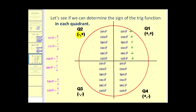In the second quadrant, x is negative and y is positive. Anything involving x would be negative. So cosine, secant, tangent, and cotangent all involve an x, therefore they will all be negative in the second quadrant. Sine and cosecant will be positive.